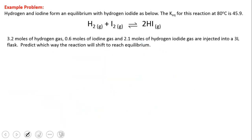Now let's do an example problem. This works just as well for chemical reactions as for physical equilibria. We'll use the equilibrium between hydrogen gas and iodine gas forming hydrogen iodide. We're told that Keq for this reaction at 80 degrees is 45.9 — remember, only temperature can change the equilibrium constant for a given reaction. In a 3-litre flask, we have 3.2 moles of hydrogen, 0.6 moles of iodine, and 2.1 moles of hydrogen iodide gas. We have to predict which way the reaction is going to shift to reach equilibrium. The first thing to do is write the equilibrium expression: Keq equals products over reactants, so concentration of hydrogen iodide squared, divided by concentration of hydrogen times concentration of iodine.